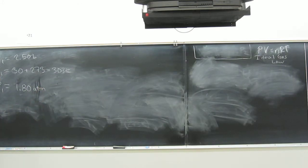So then it says, what volume in liters will the sample have if the pressure is increased to 3.00 atm and the temperature is increased to 100 degrees Celsius? So what are we looking for? V2, right?